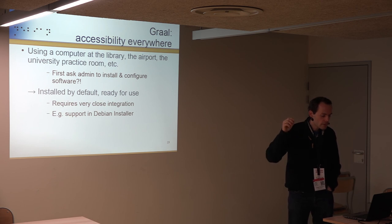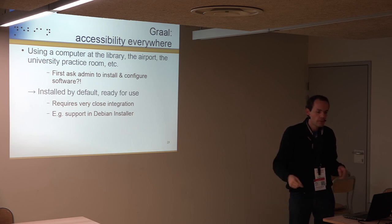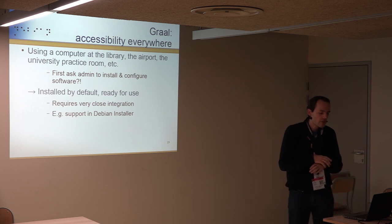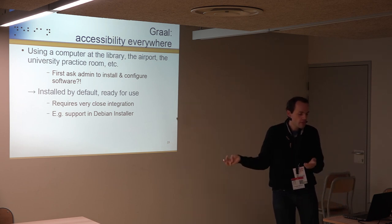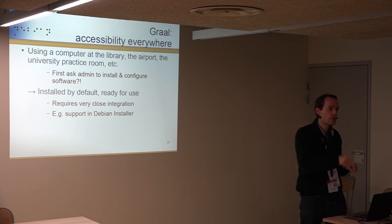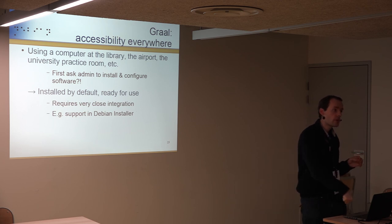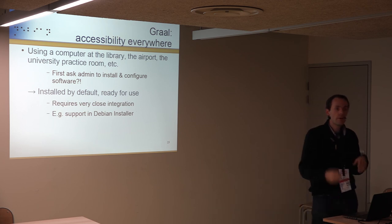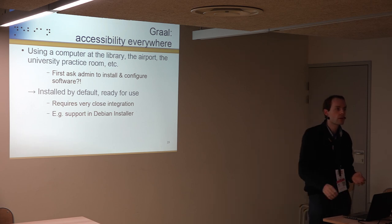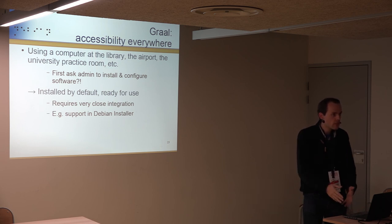The idea is it's installed by default, ready for use — you just press a shortcut, plug something in, or whatever to trigger enabling the support. In the Debian installer, when you have the boot prompt you can type 's' and press Enter to get speech. If you plug in a Braille device via USB, the Debian installer detects it and enables Braille support automatically.